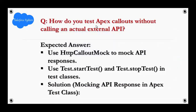Next question: How would you test an Apex callout without calling an actual external API? Expected answer: use an HTTP callout mock to mock the API response. Use Test.startTest() and Test.stopTest() in test classes. Solution: mocking the API response in an Apex test class.